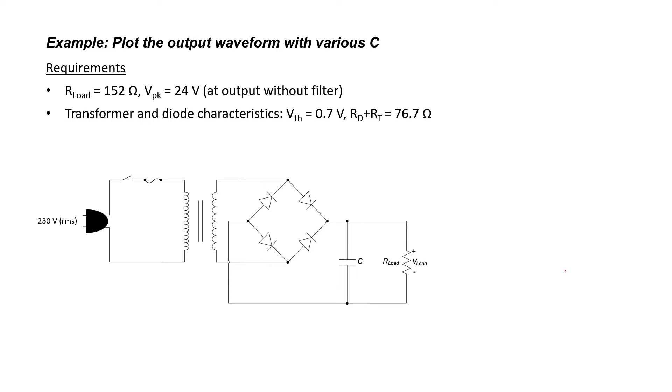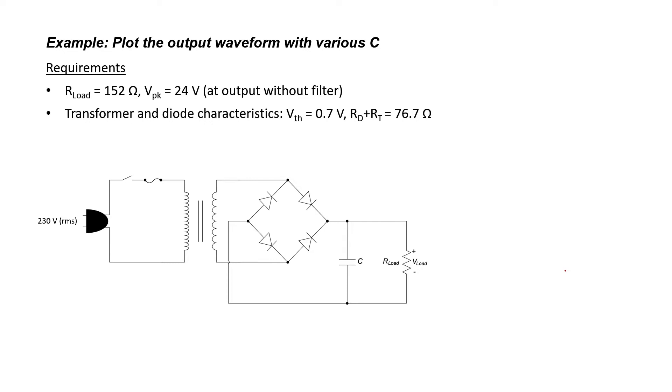It's this non-ideality in our transformer and diodes that allows the ripple capacitor to function as a filter in this particular circuit. We're going to be assuming a load resistance of 152 ohms and a peak voltage of 24 volts showing up at the output if the capacitor's not there at all.